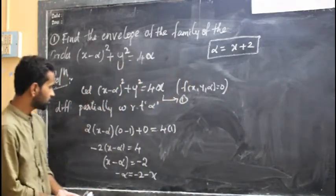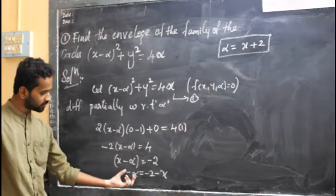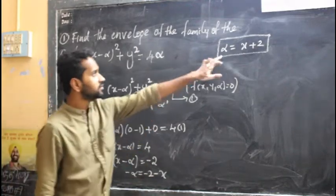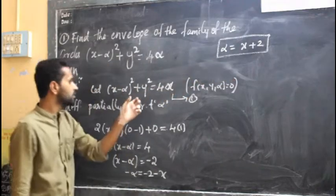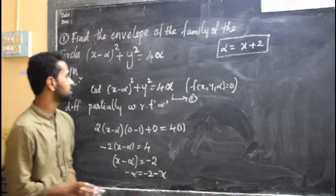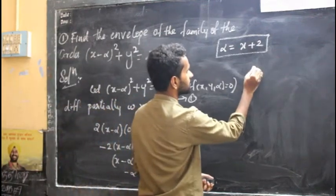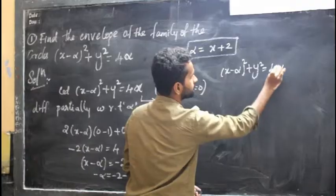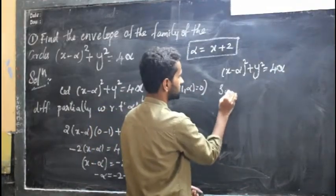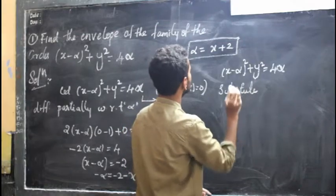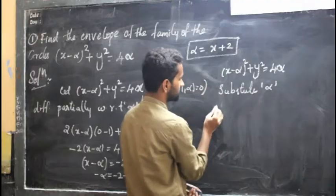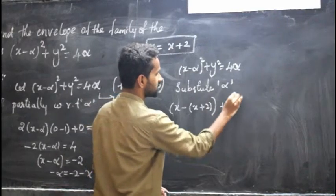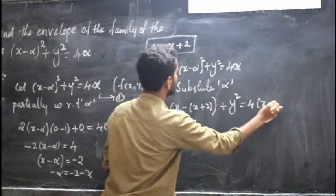This is the alpha value. I already found that dou f by dou alpha gives minus alpha equal to minus 2 minus x, so alpha equal to x plus 2. Now I use this and equation 1 together. I am going to write the alpha value back into the given family of the curve: x minus alpha whole square plus y squared equal to 4 alpha. Substituting alpha, it becomes x minus x plus 2 whole square plus y squared equal to 4 into x plus 2.